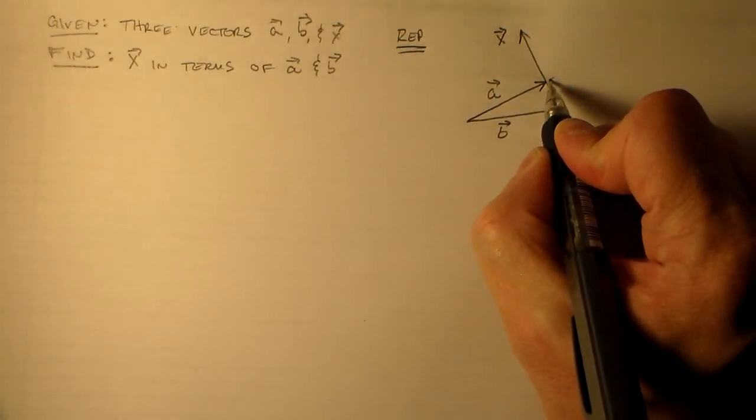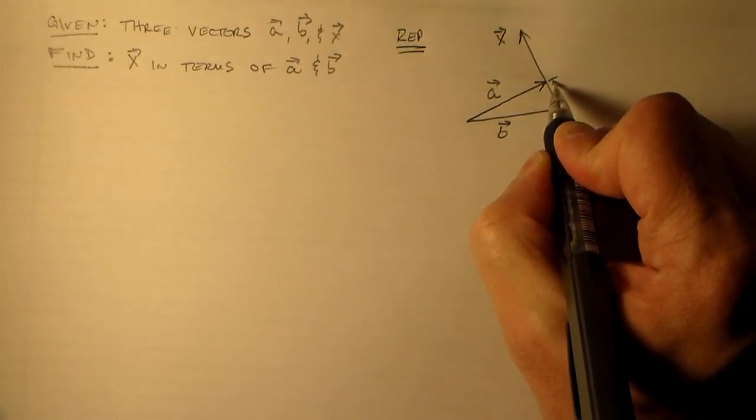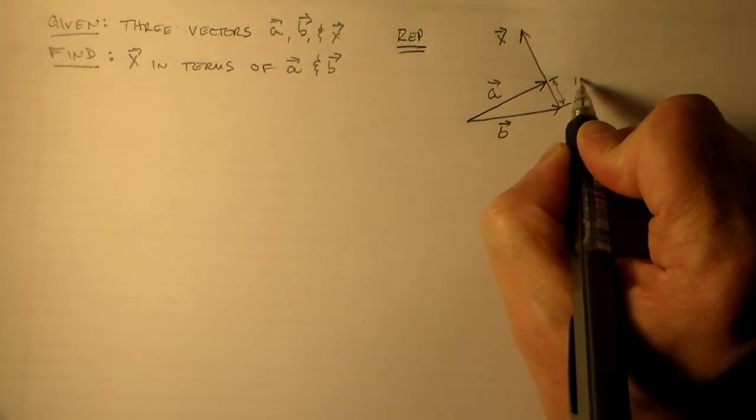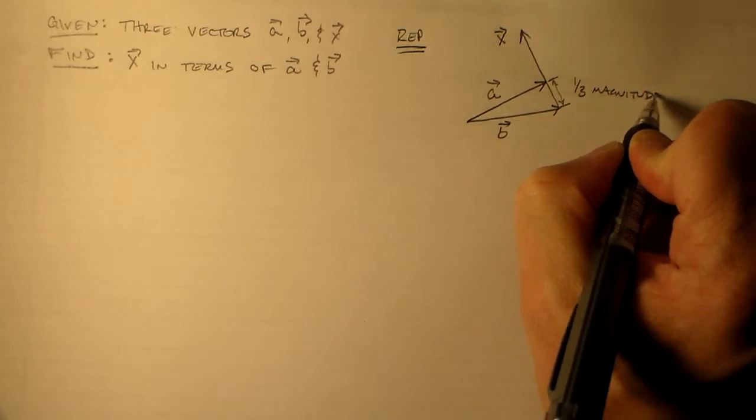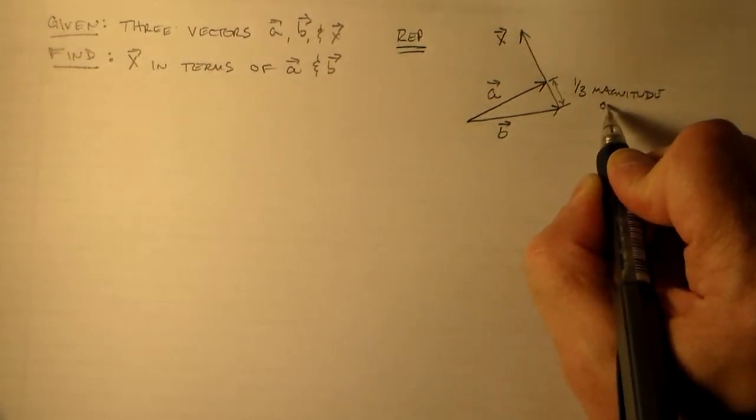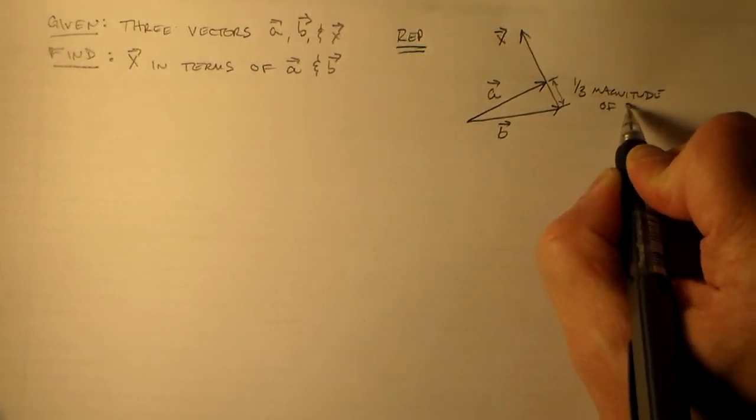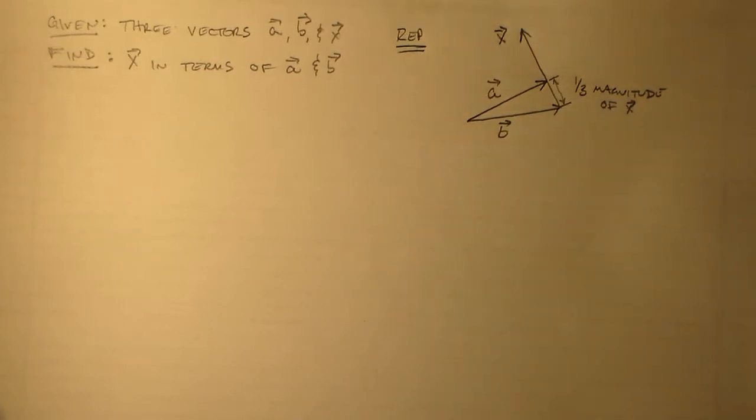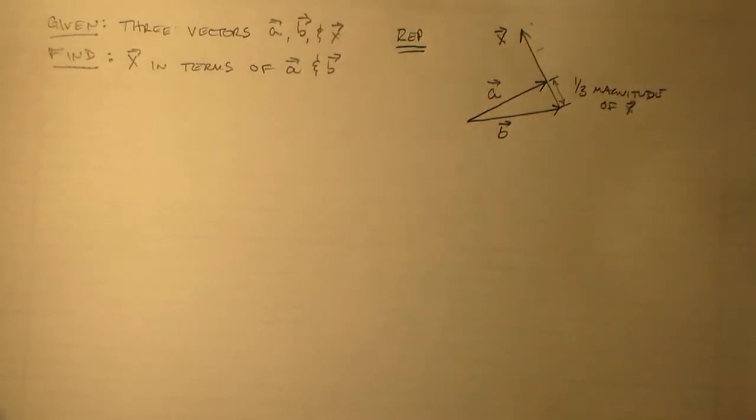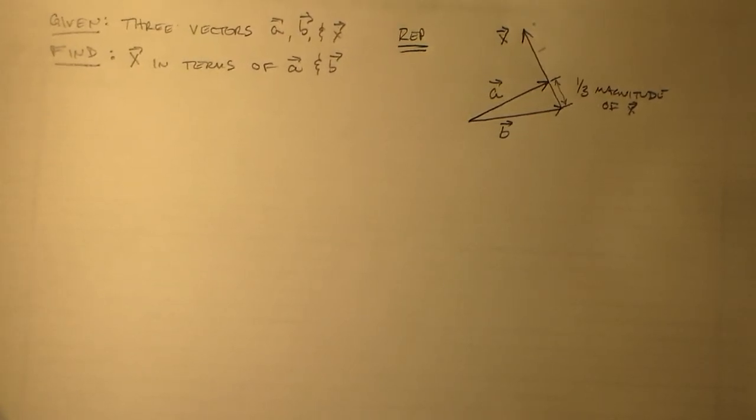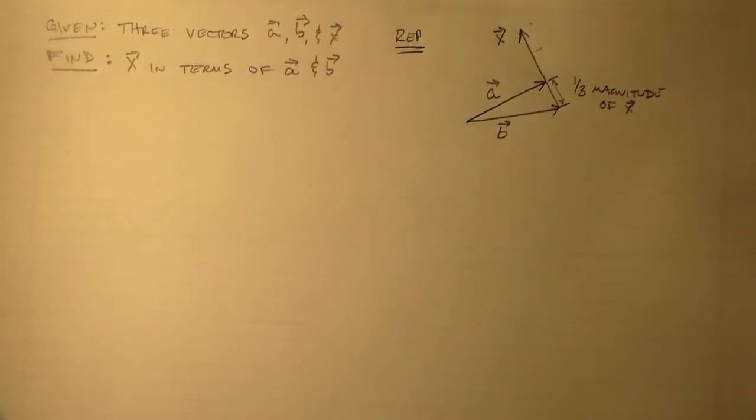And then this point here is one third of the magnitude of x. So this span is one third of the magnitude of x. Got another span, and then another span, and then we're at the end of the vector. Okay, so that looks like a lot of fun. Don't you think that looks like a lot of fun? We just figure this out. We just use our brains.